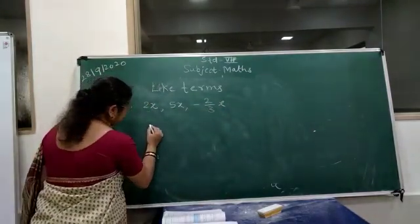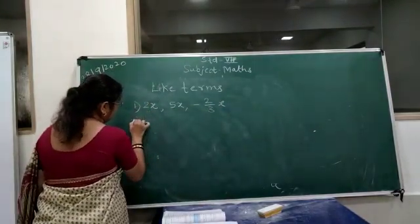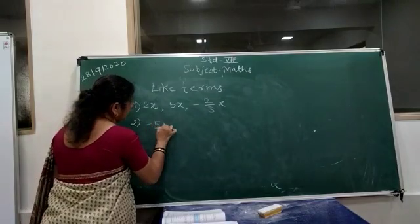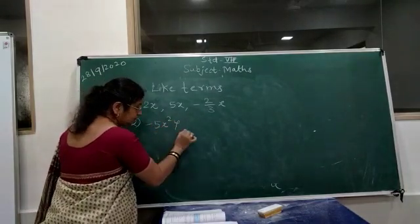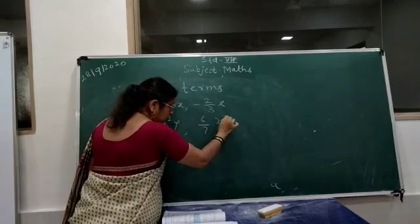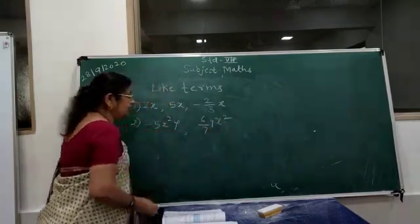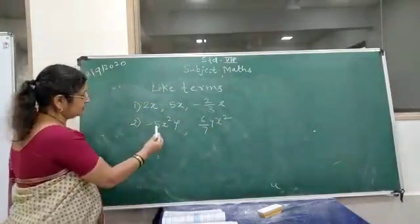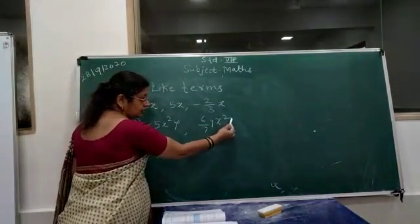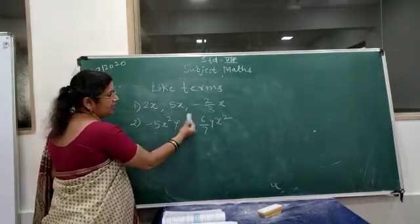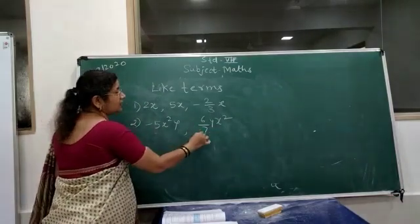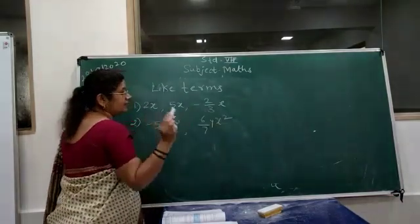Another example: 5X squared Y and 6 upon 7 YX squared. In this case also, the power of X is 2 in both terms and the power of Y is 1 in both terms. So they are like terms.